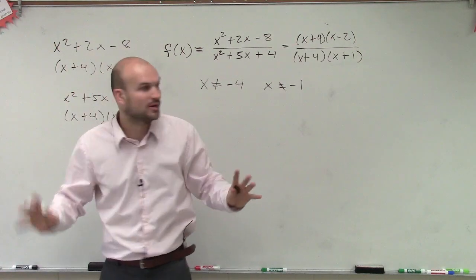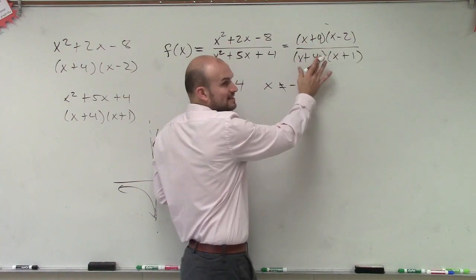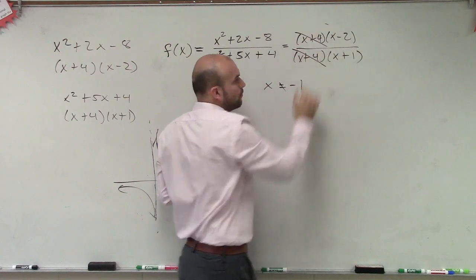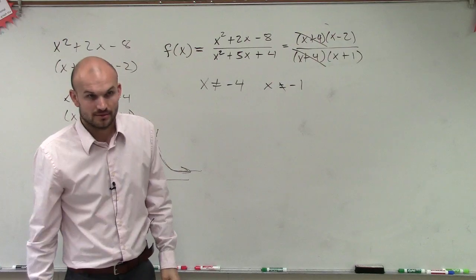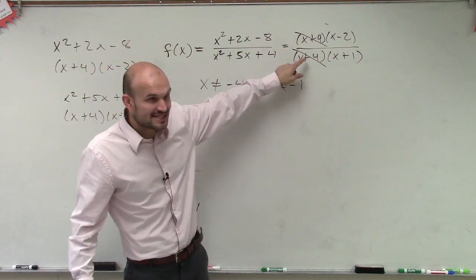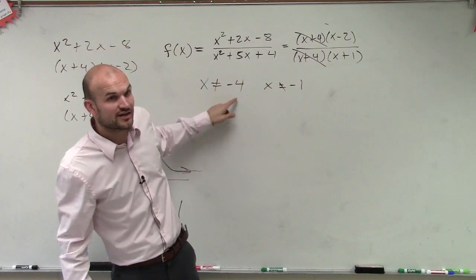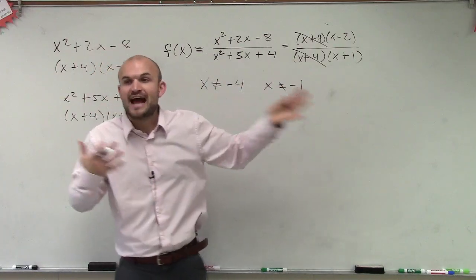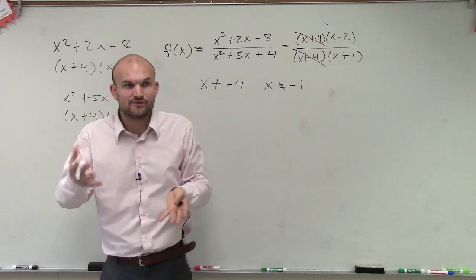But here's where the discontinuities come into play. Once these are factored, this goes to 1, right? Yes? So this is still a discontinuity. You still cannot equal negative 4, but you can factor it out. Or when you factor, it gets canceled. So it's what we call removable.